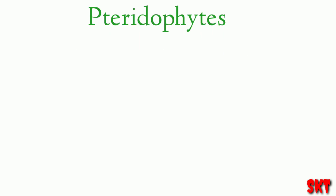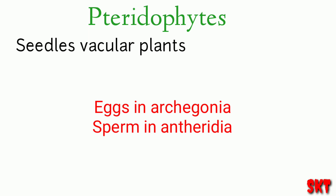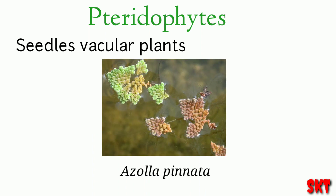The last one in cryptogamae is pteridophytes. These are seedless vascular plants. They possess stomata for gaseous exchange for photosynthesis. They produce chlorophyll A, B, carotenoids, and starch. The eggs are produced in archegonia and sperms are produced in antheridia. The flagellated sperm swim through the water to fertilize the eggs. Common examples are Selaginella and Azolla pinnata.